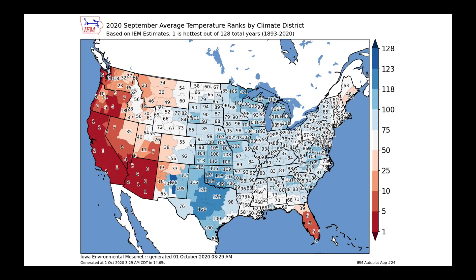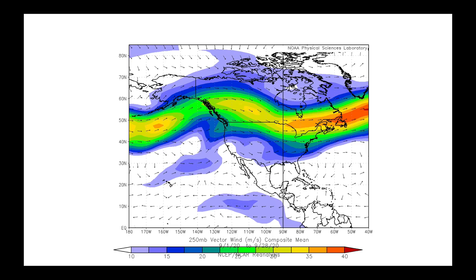Quick review — I showed you this on Monday, but here's the full update on September. These are the temperature ranks by Climate District. We can clearly see how warm the western United States was, and with frequent intrusions of cooler air in the central plains spreading east, a lot of the eastern two-thirds of the country spent September favoring cooler than average weather. I made a composite map showing the jet stream flow throughout September so you can follow the mean atmospheric flow.